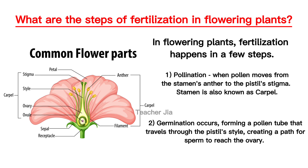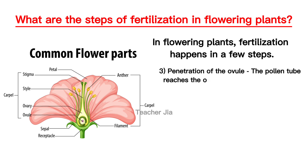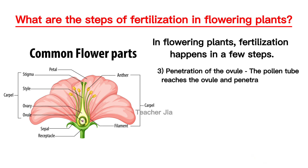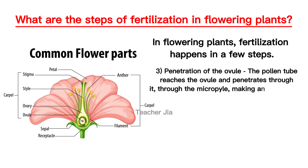After that we have penetration of the ovule, which is the third step. The pollen tube reaches the ovule and penetrates through it via the micropyle, making an opening for sperm to enter the egg.